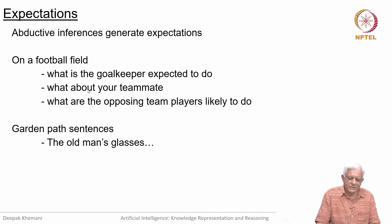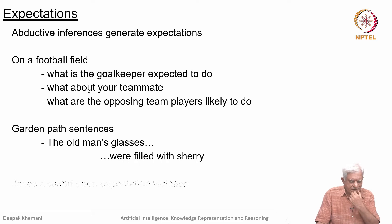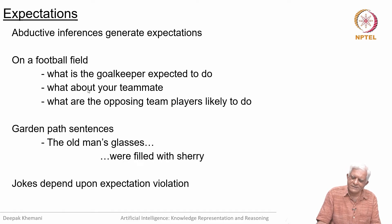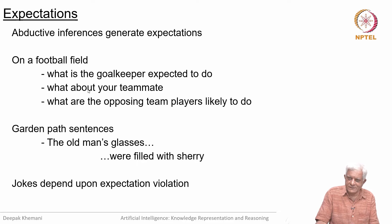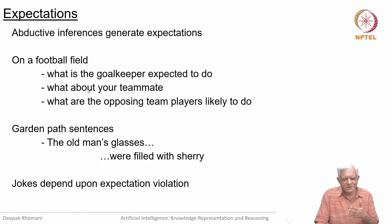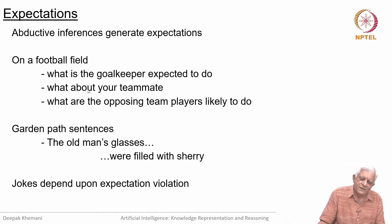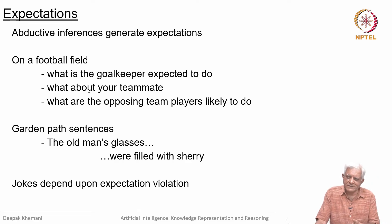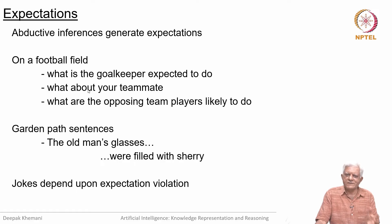There are something called garden path sentences. If you read 'the old man's glasses,' you expect something, but then you read the rest of the sentence and that expectation is violated. You might be thinking of reading glasses or spectacles, but then you find that they were filled with sherry. Your word sense of 'glasses' has changed. When reading the sentence, you expected something like his glasses were broken or lost, but then you read the rest and are filled with a little surprise, because your generated expectation was violated and you have to revise how you understood the sentence.